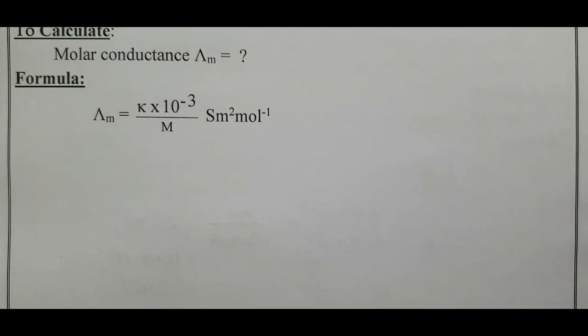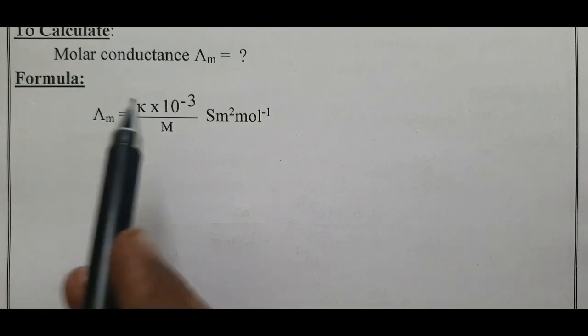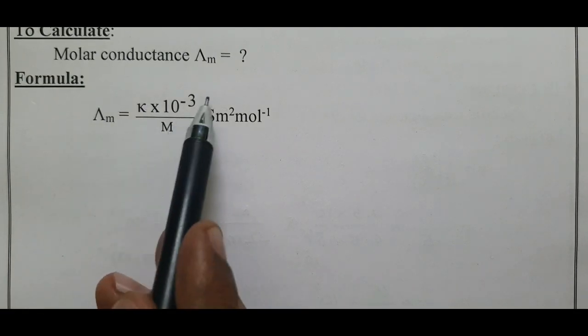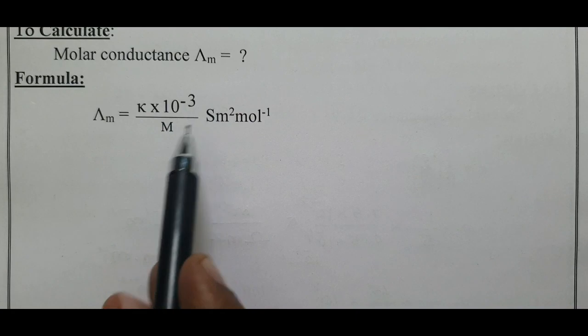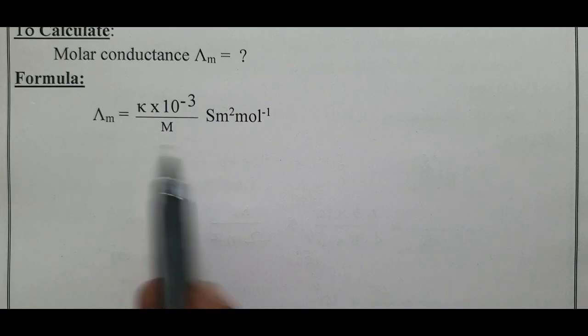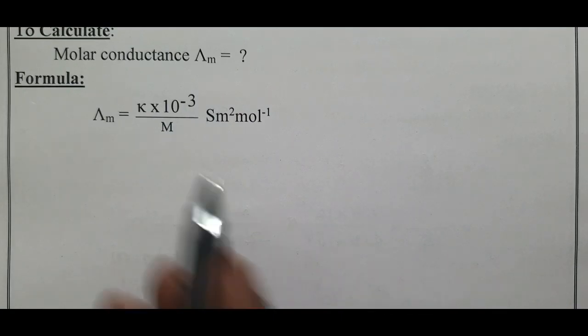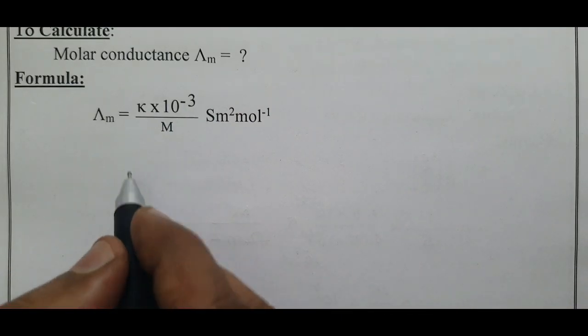To calculate the molar conductance, capital lambda m, the formula is: molar conductance Λm = (κ × 10⁻³) divided by molarity.